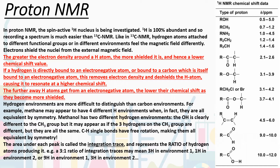If hydrogen is directly bound to an electronegative atom, or it's bound to a carbon which is itself bound to an electronegative atom, this removes electron density and deshields the hydrogen atom. If we deshield our hydrogen atom, it feels more of the external magnetic field, resonates at a higher frequency, and hence has a higher chemical shift. The further the H atoms get from an electronegative atom, the lower the chemical shift — the less this electronegative inductive effect is felt.